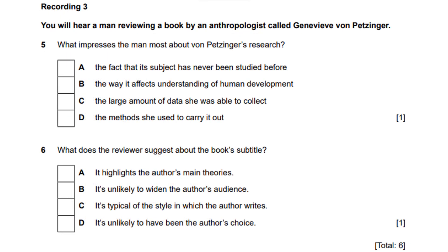Recording 3: a man reviewing 'The First Signs' by anthropologist Genevieve von Petzinger, about geometric signs painted on the walls of 400 caves across Europe. Created between 10,000 and 40,000 years ago, these signs have been largely ignored as experts focused on cave paintings of large animals. Von Petzinger surveyed the limited literature, conducted extensive investigations, created a database of 5,000 symbols, and identified 32 repeated types including crosses, triangles and zigzags.